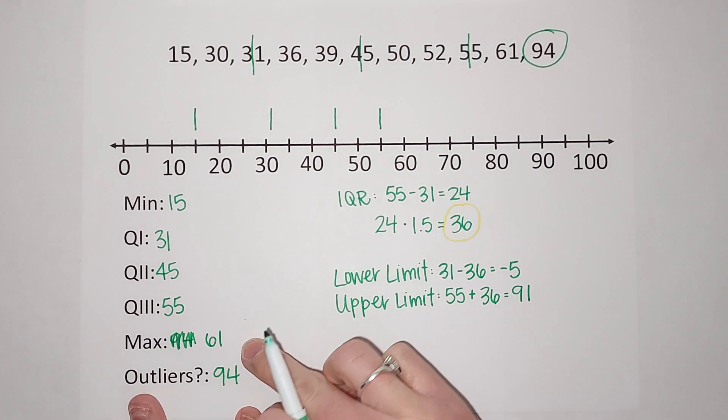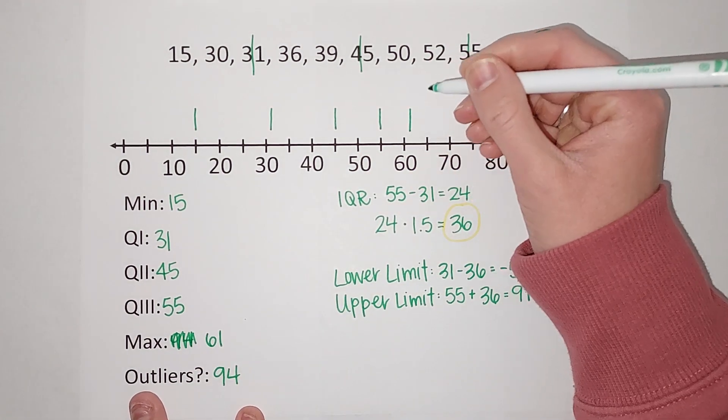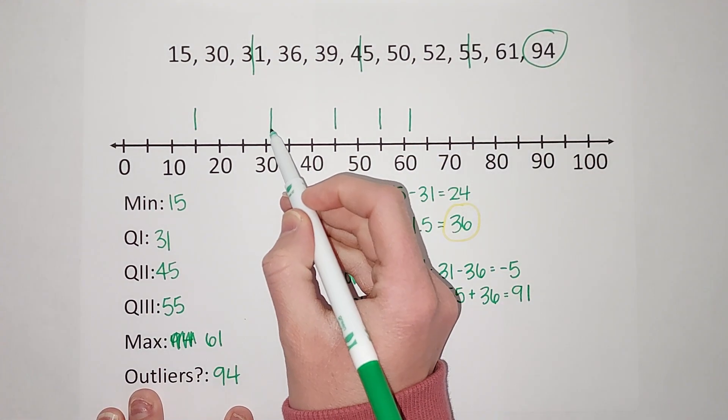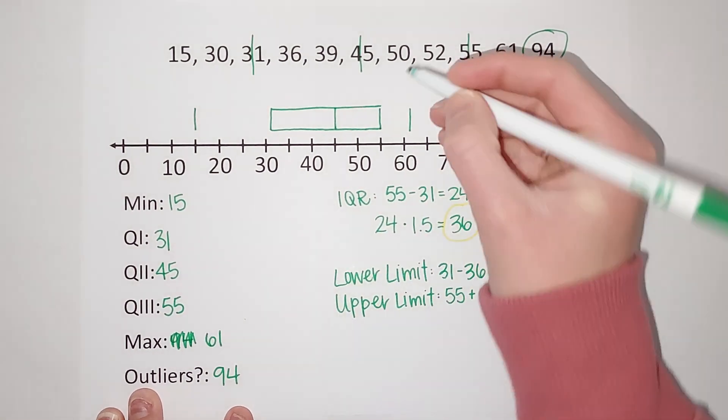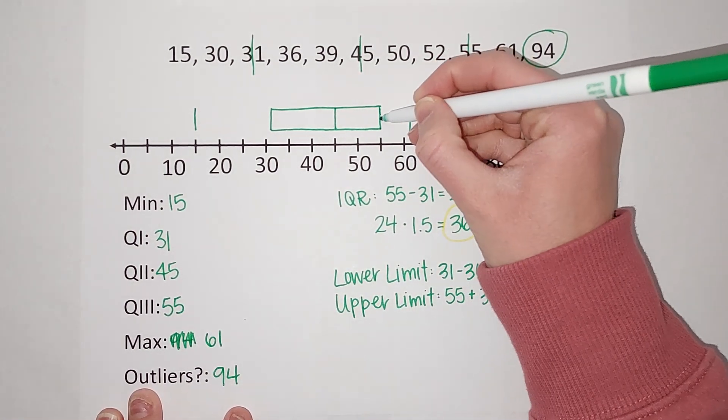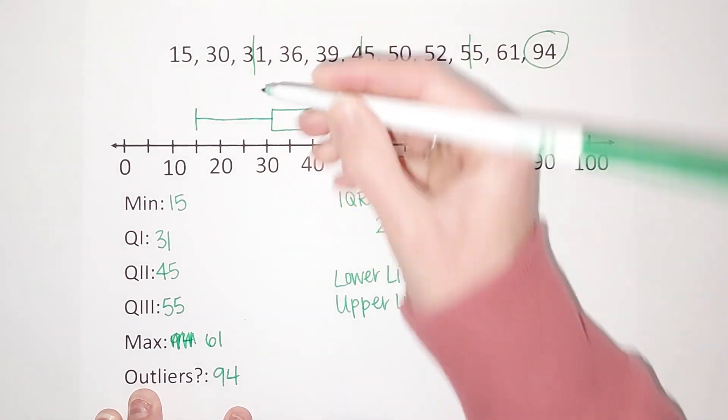This is why it's called a modified box plot, because we modified what my max was, right, because of the outlier. There is my box, there are my whiskers.